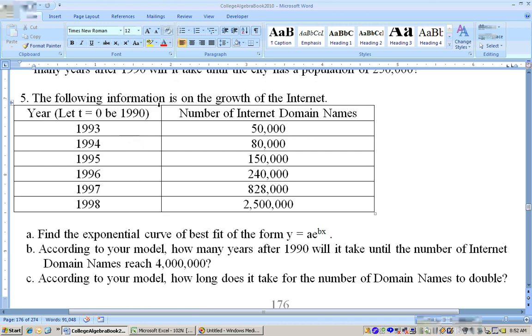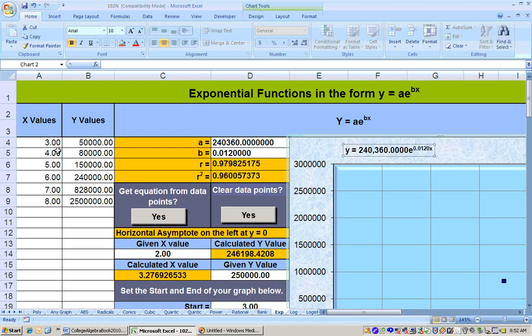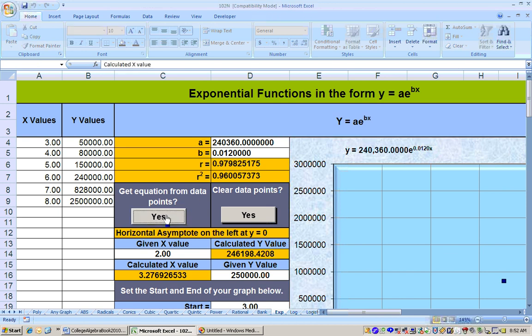On problem number 5, it says the following information is on the growth of the internet. Gives you years. T equals 0 is 1990. So, we'll need to type in 3, 4, 5, 6, 7, 8 for your X's. And here's your internet domain names. We're supposed to find the exponential curve of best fit. So, do some modeling. According to this model, how many years after 1990 will there be 4 million internet domain names, and how long does it take to double? Let's go ahead and do this problem. I copied and pasted as special as text this data in here. And then I made these 3, 4, 5, 6, 7, 8. And then I click this button, and I'll get the exponential function of best fit. And it gets that equation for you.